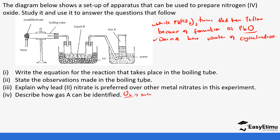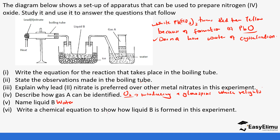To identify gas A (oxygen), introduce a glowing splint, which relights. Liquid B is not water — it is dinitrogen tetroxide (N₂O₄). The equation showing how liquid B is formed: 2NO₂ (gas) condenses to form N₂O₄ (liquid) upon cooling.